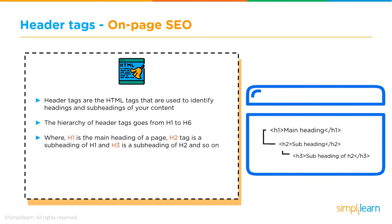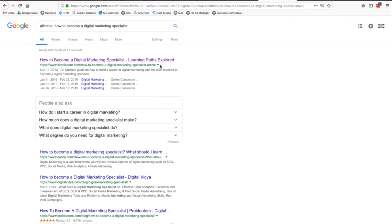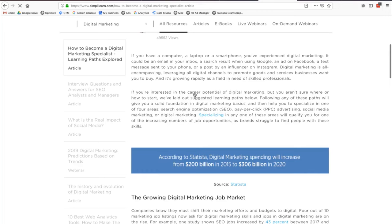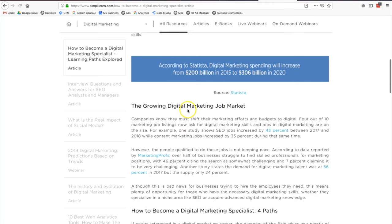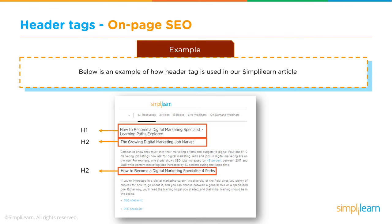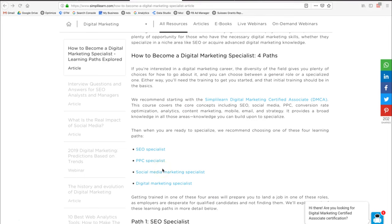Looking at the 'how to become a digital marketing specialist' page, you can see headers organizing the content. For example, the H1 is 'How to Become a Digital Marketing Specialist: Learning Paths Explored,' and a sub-header H2 is 'The Growing Digital Marketing Job Market.' This structure signals to Google what's important and also organizes content in a way Google likes — clear, readable, and hierarchical.